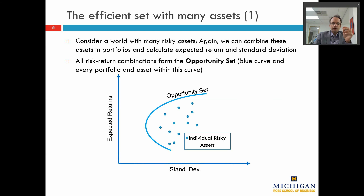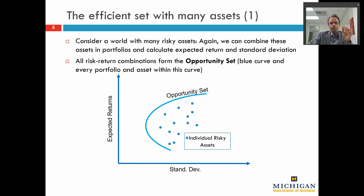Those efficient portfolios are efficient in a very particular way. We used the term mean-variance efficiency — that means there is a set of portfolios which offers the highest expected return for a given level of risk, or in other words, the lowest risk for the same expected return. Remember, we combined CVS, Microsoft, and Chevron into different portfolios, and we worked out that there were some portfolios which were feasible for the investor, and some portfolios which no investor, regardless of their risk preference, would rationally buy.